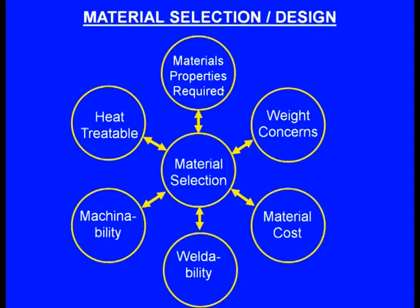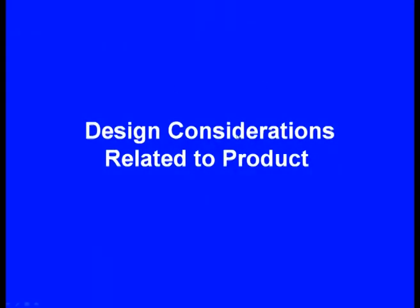These are the factors considered while choosing the material for the component we are going to cast. Now let us see the design considerations related to the product. The first thing is geometric features to incorporate into the part. The customer may give us a drawing, but as-is it is not possible to make the casting — some features have to be modified to cast the component successfully without complications.